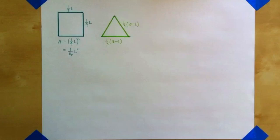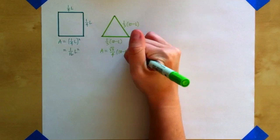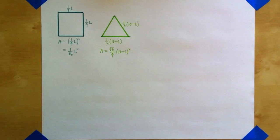Using the piece of length 10 minus L to form the equilateral triangle means that each side of my equilateral triangle is one-third times 10 minus L. To find the area of the equilateral triangle, I can use the formula for the area of an equilateral triangle, which is square root of 3 over 4 times the square of one side.